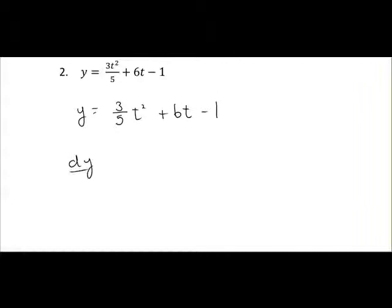So it might be easier to rewrite that as 3 over 5 times t squared plus 6t minus 1. So we differentiate this, it's dy/dt because we're differentiating y with respect to t. So here we multiply by the power so 2 by 3 over 5 will give us 6 over 5. Reduce the power by 1 so from t squared down to t to the power of 1 which is just t.